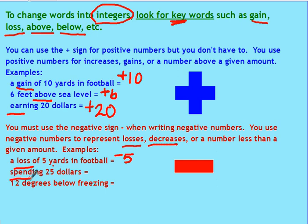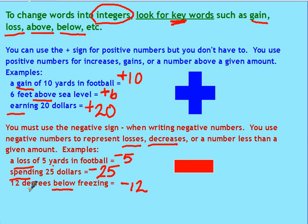Spending $25 — the integer for that would be negative 25. The integer representing 12 degrees below freezing is negative 12. So look for the number, but also look for the keyword that tells you whether it's positive or negative.